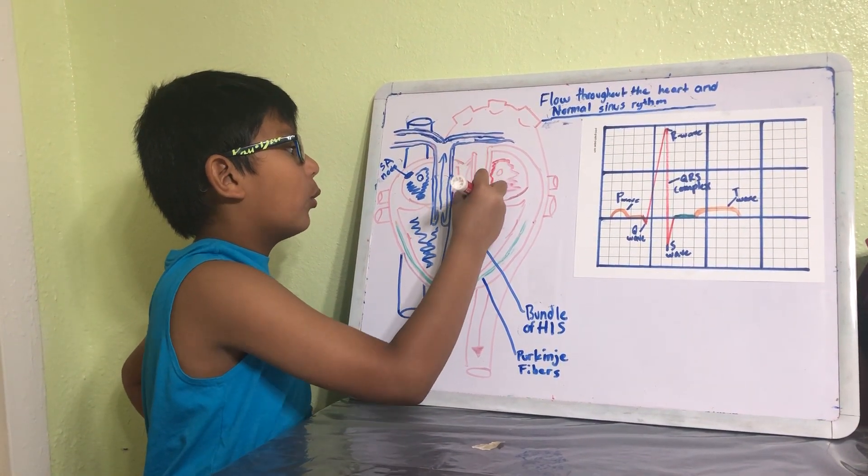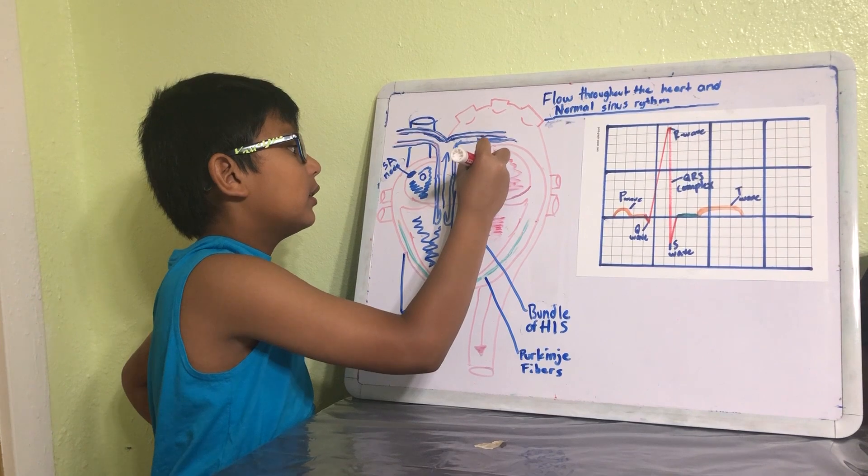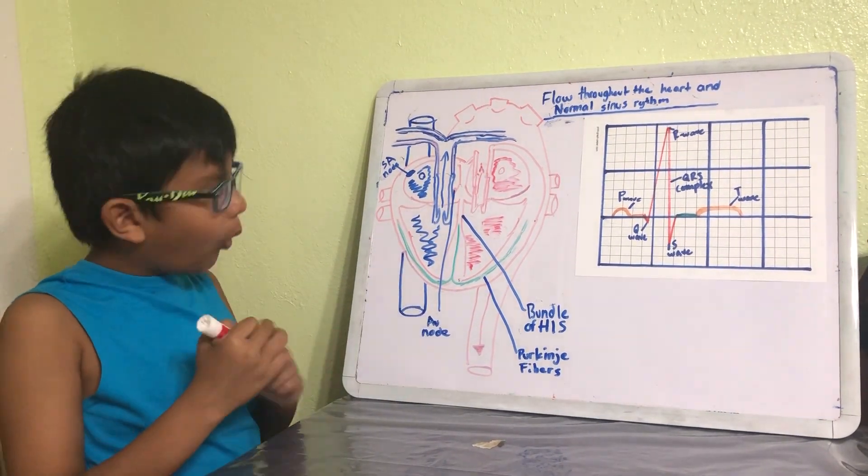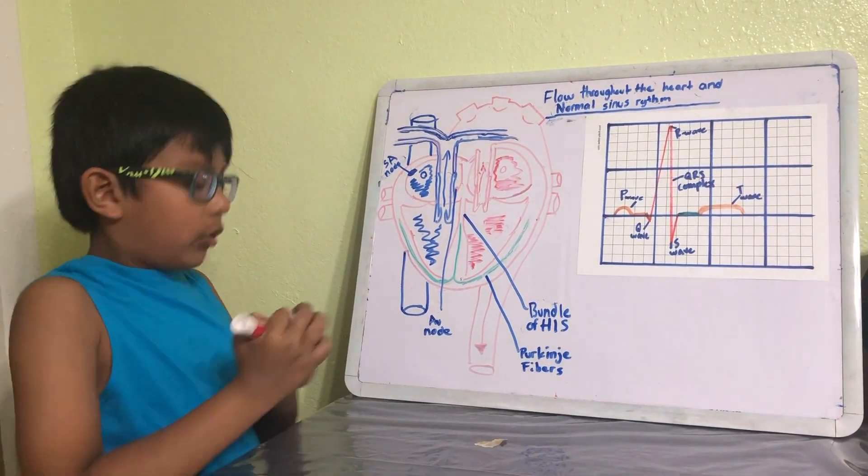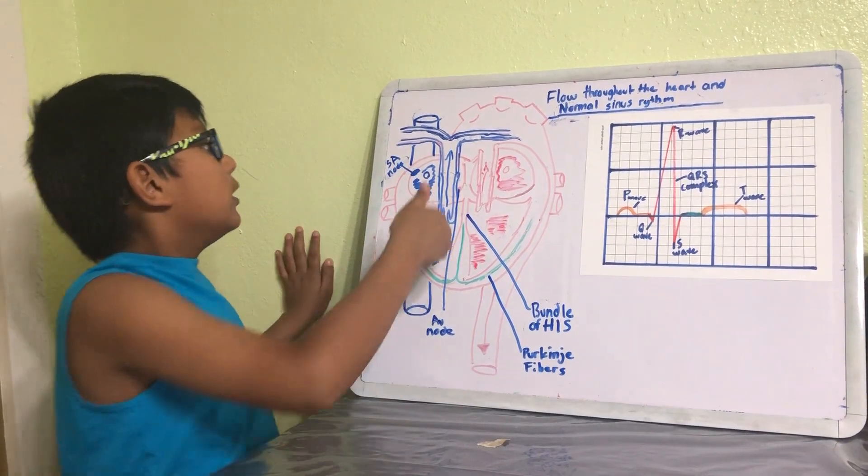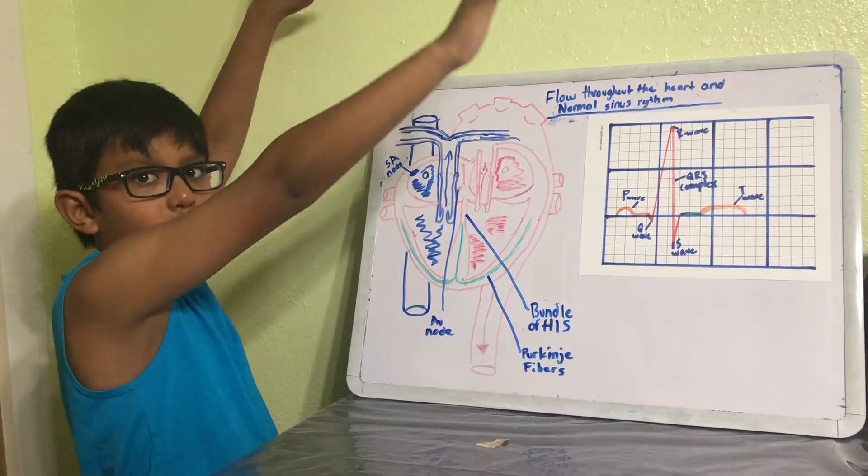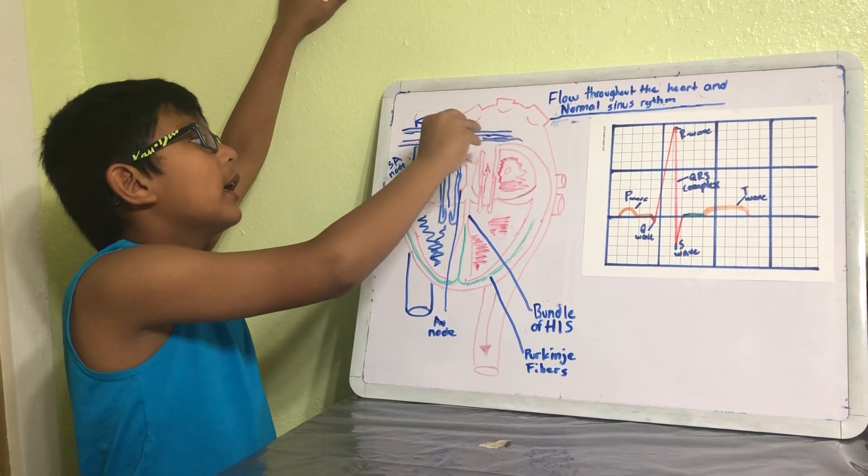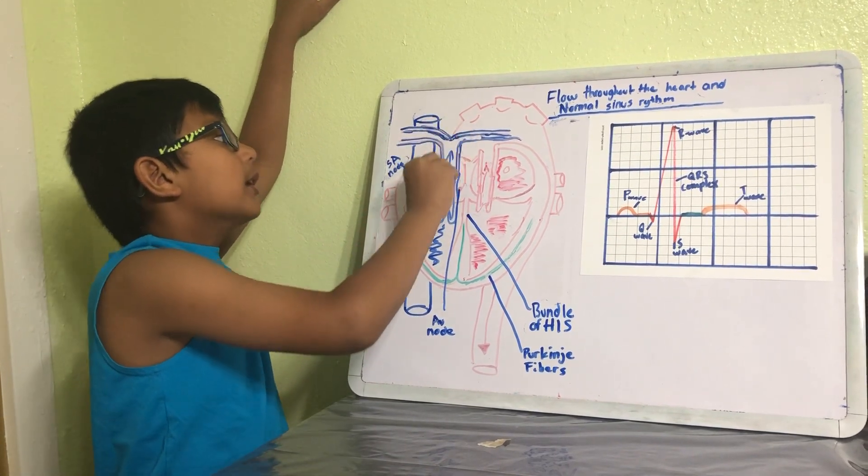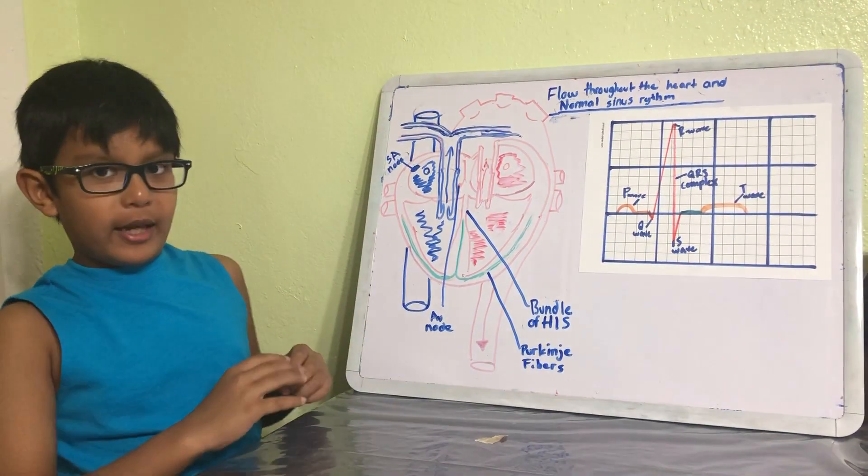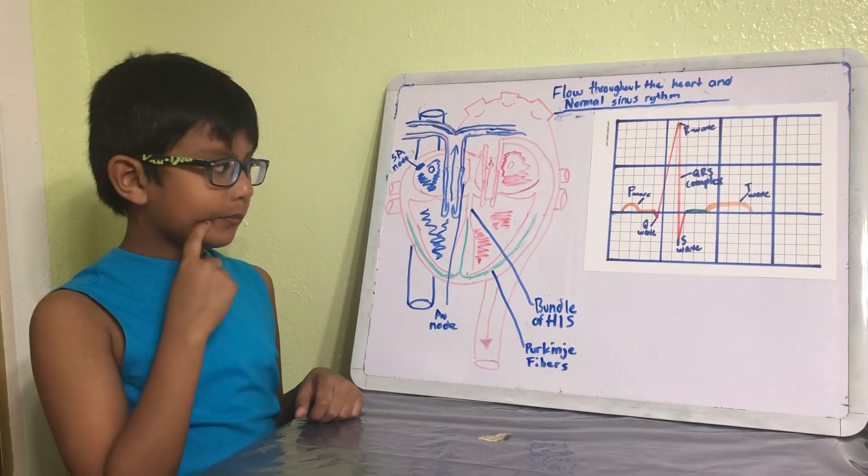So basically, essentially the whole body, and then I go out the aortic valve into the systemic circuit, and then I get pushed through the aorta and delivered to the body.